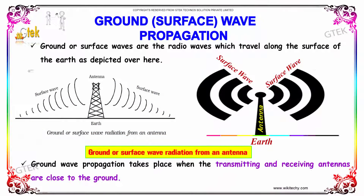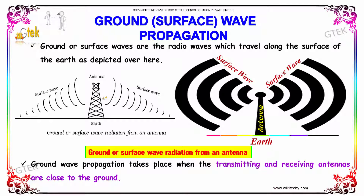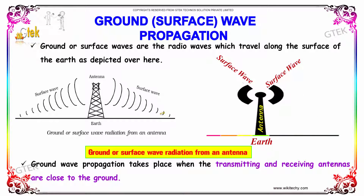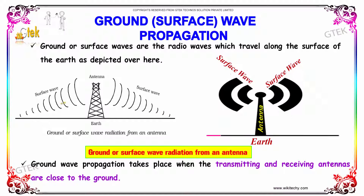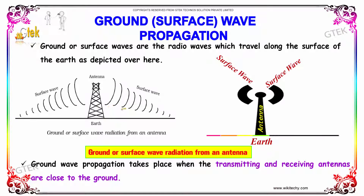Ground or surface waves are the radio waves which travel along the surface of the earth. You are able to see the ground or surface wave radiation from an antenna. Ground wave propagation takes place when the transmitting and receiving antennas are close to the ground.